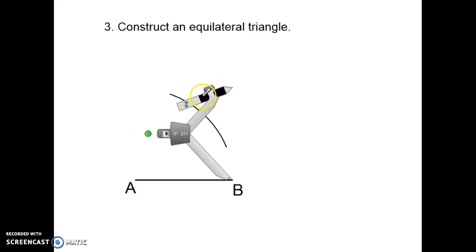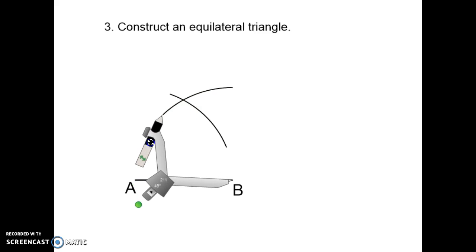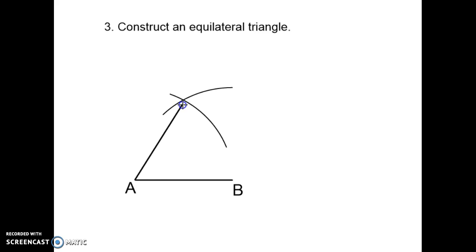With the same compass opening, move to the other end of the line and draw an arc that intersects with the first arc. Now take your pencil and ruler and draw a line from one end of the line to the arc intersection, then do exactly the same from the other end. You've now created an equilateral triangle — these angles will be 60, 60, and 60 degrees, done without measuring with a protractor.